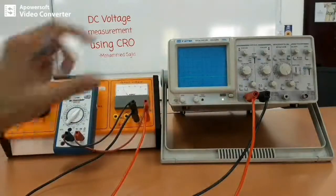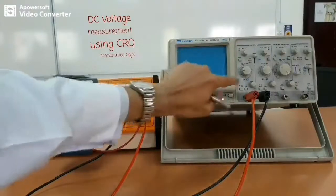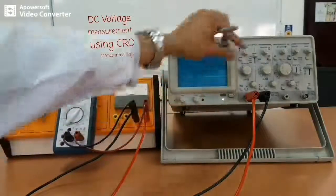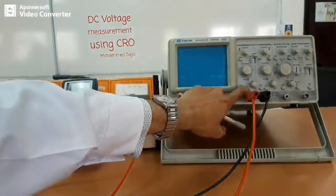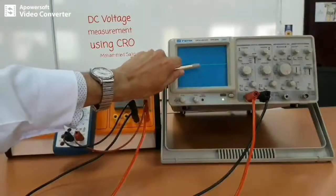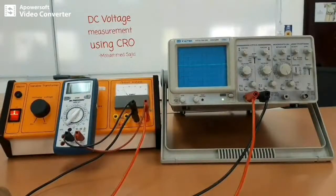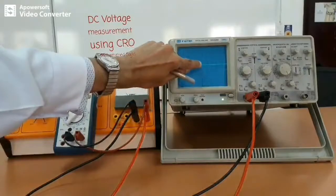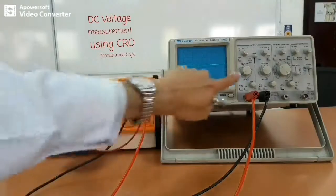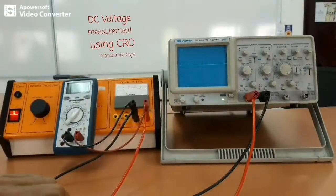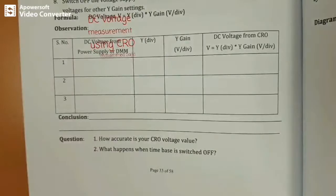If you change the Y gain to 2 volts per division and release the ground, the line does not go up by 5 full divisions. Count from the zero line: 1, 2, and then small divisions where one small division equals 0.2, so it reads 2.5. Now we will write our readings in the observation table.